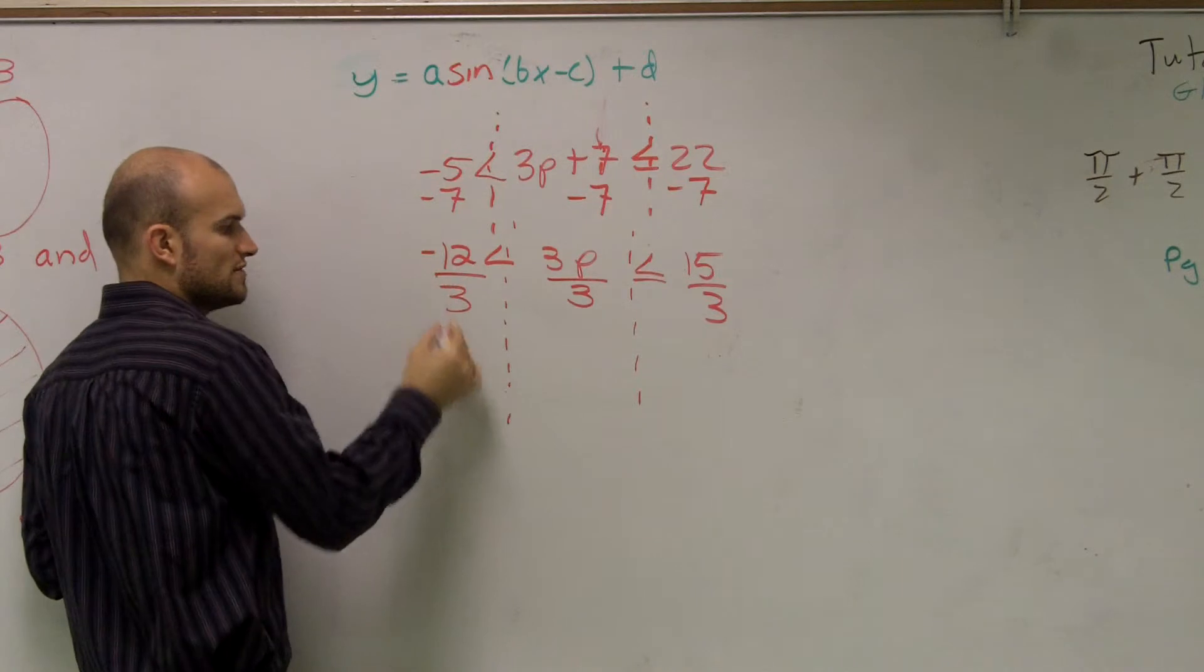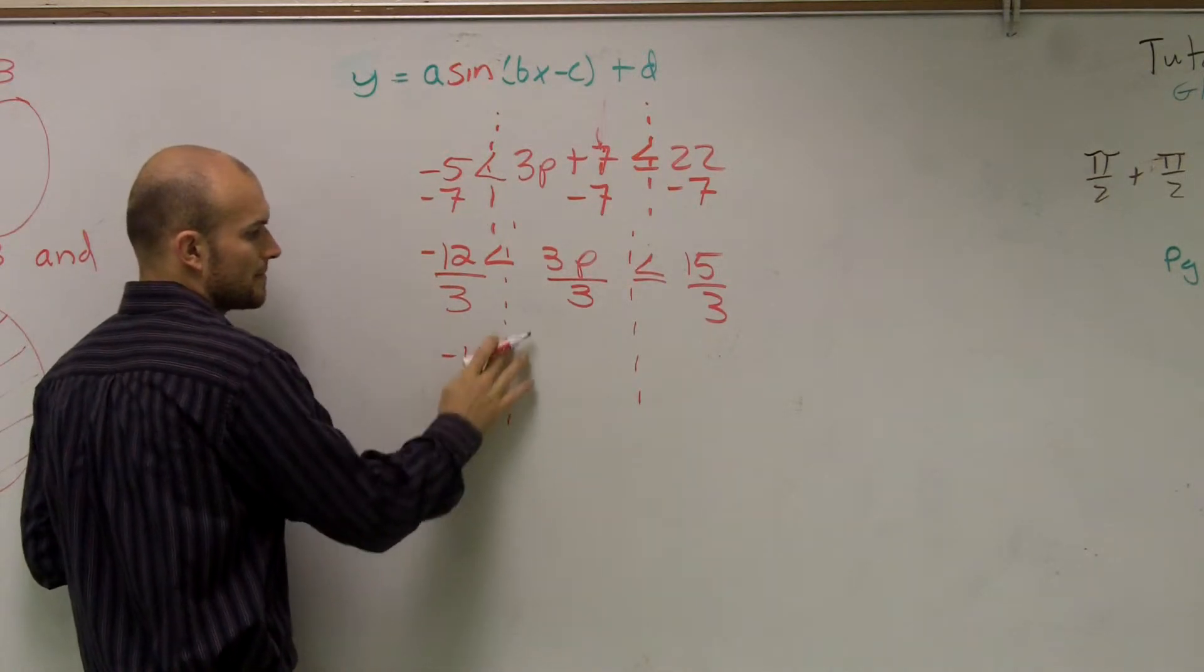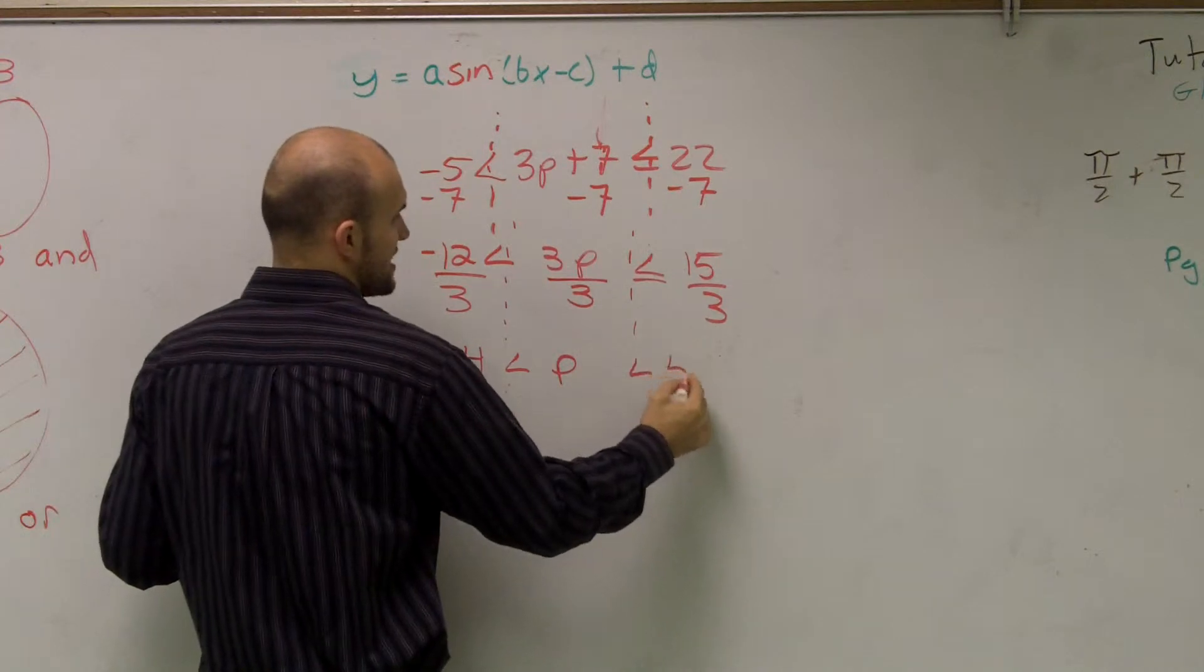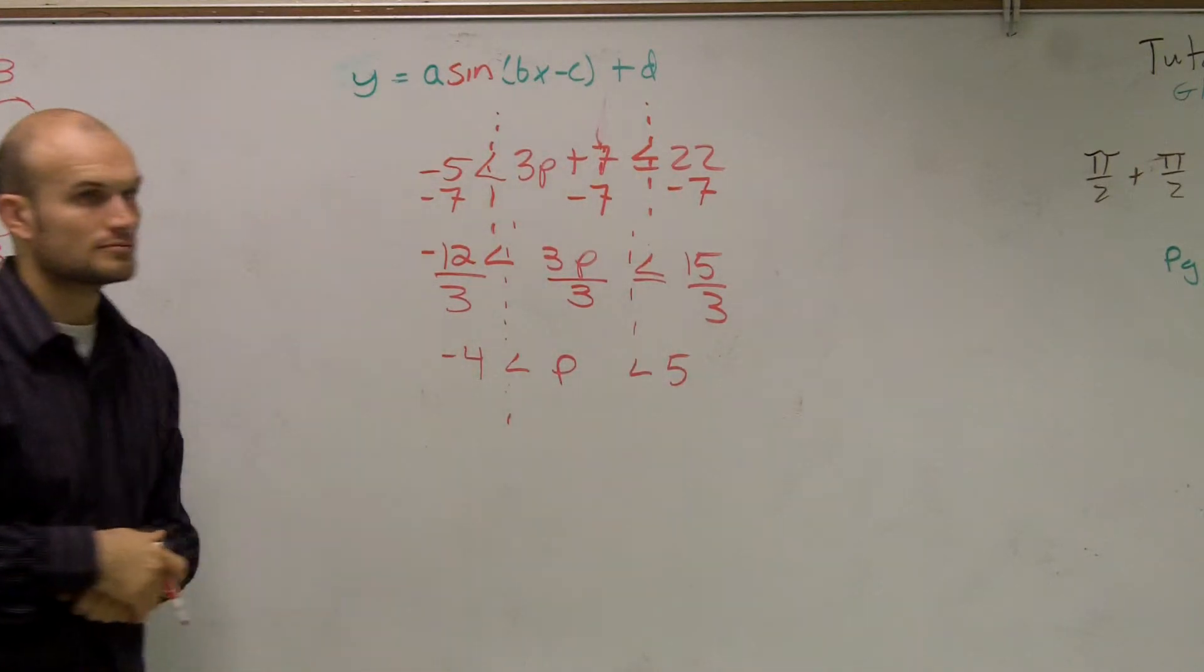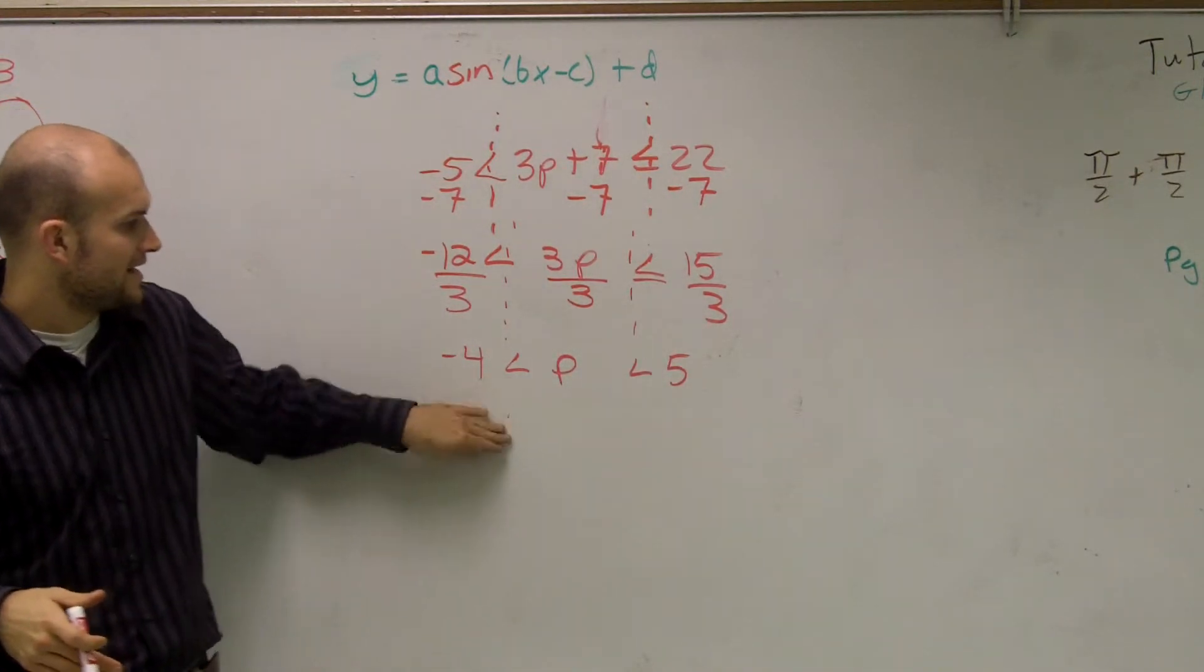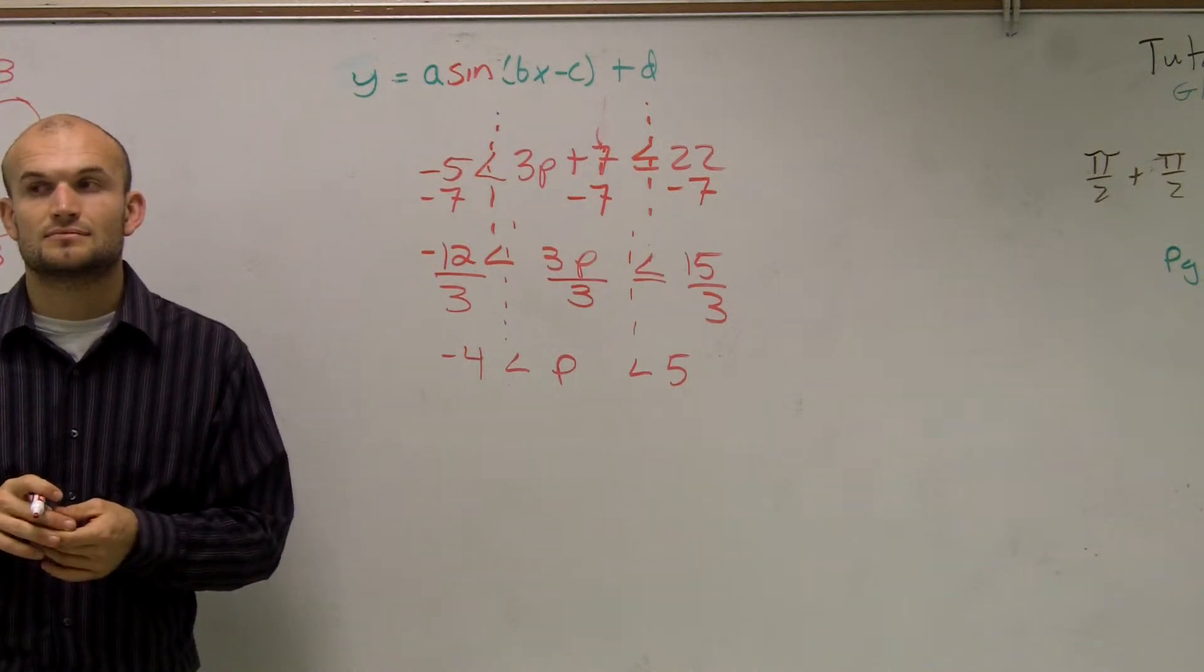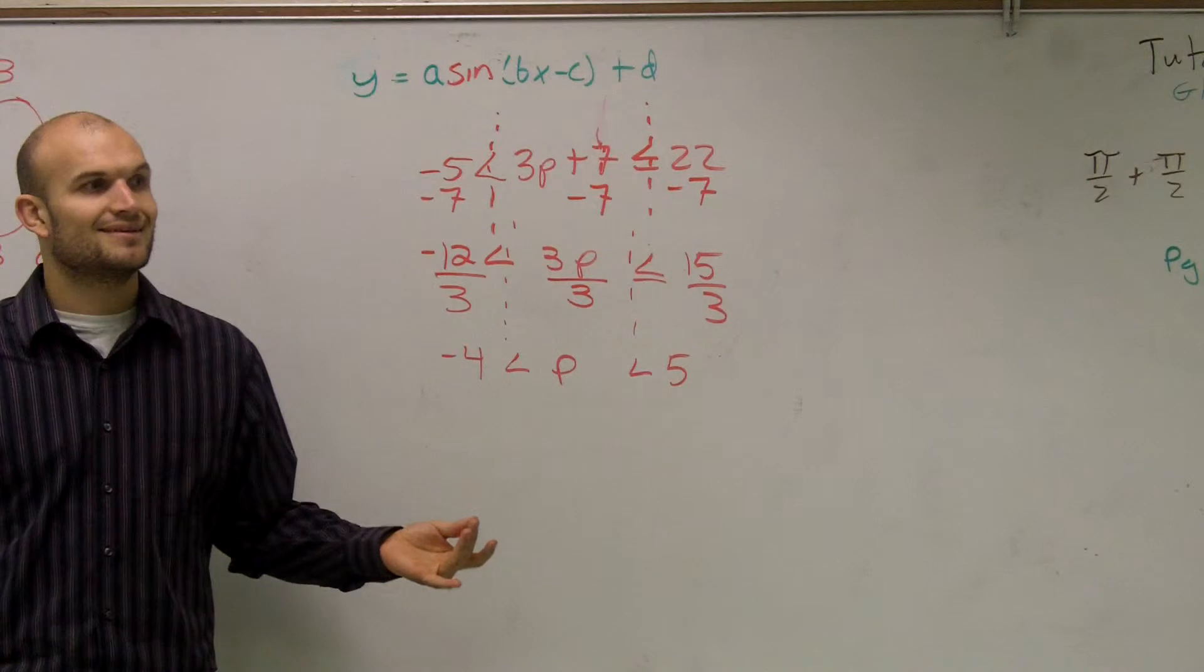So therefore, negative 12 divided by three is negative 4, is less than P, which is less than 5. So therefore I have negative 4 is less than P, which is less than 5. Isn't that awesome? That is amazing.